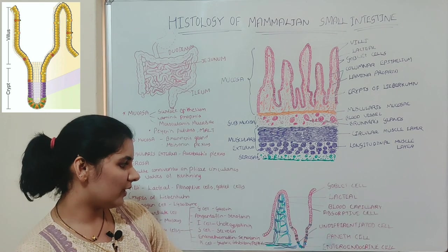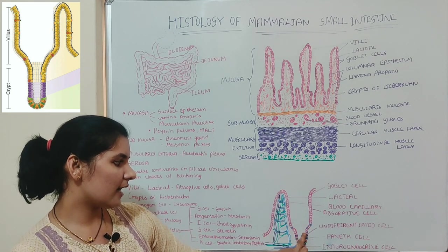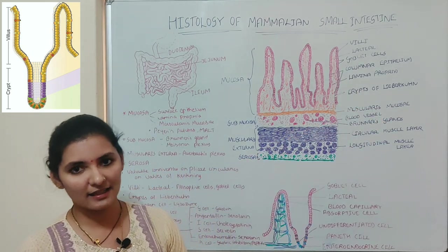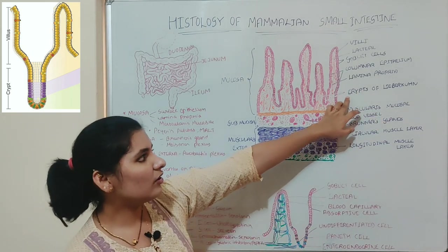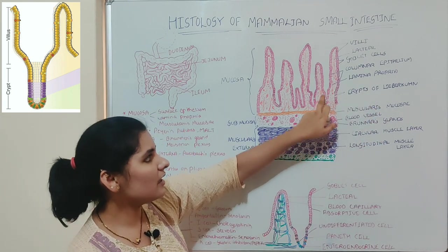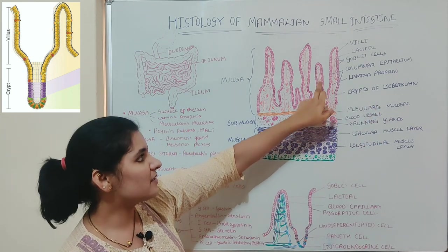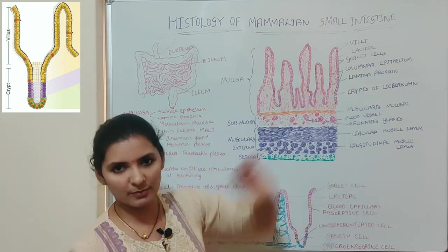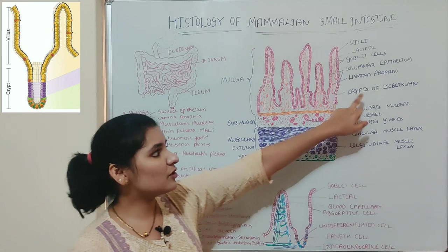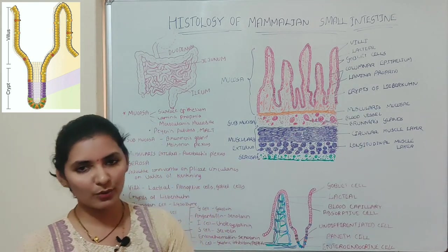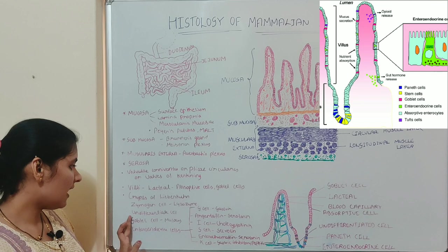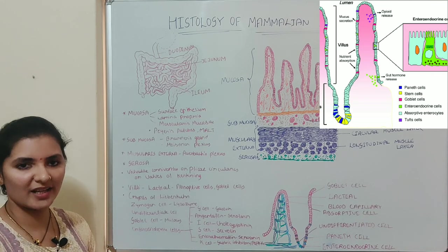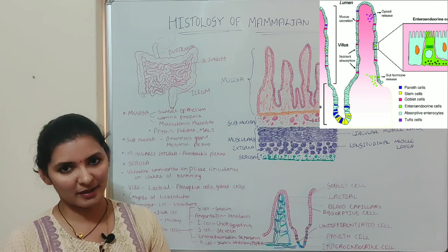In between two villi, a small tubular gland is present known as the Crypts of Lieberkühn, or intestinal glands. These are simple tubular glands present between two villi, extending down to the muscularis mucosa. The Crypts of Lieberkühn consist of mainly four types of cells: zymogen cells, undifferentiated cells, goblet cells, and enteroendocrine cells.